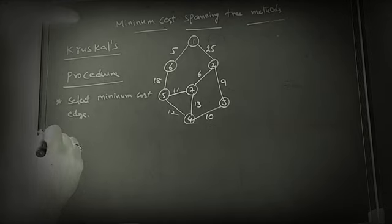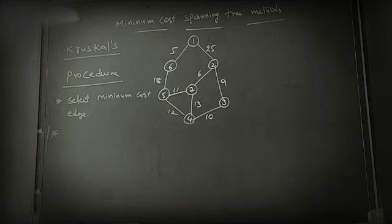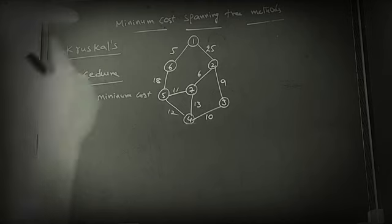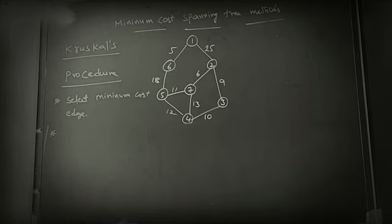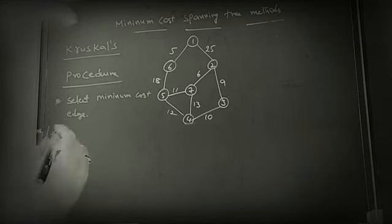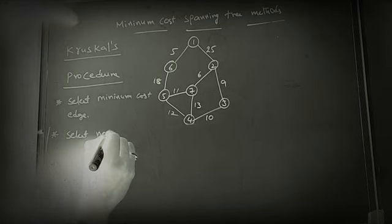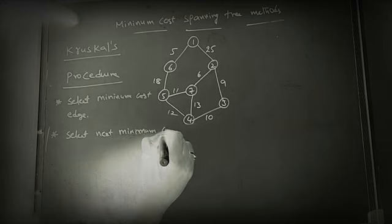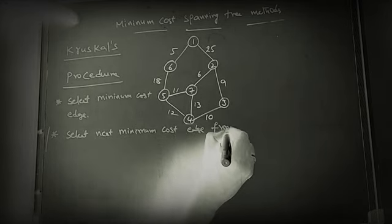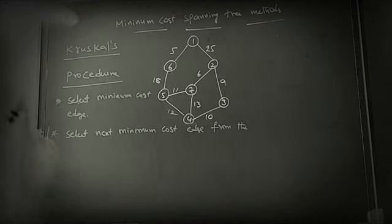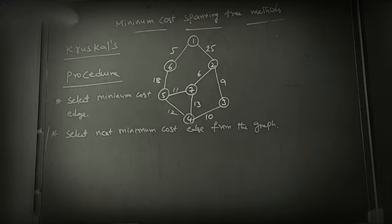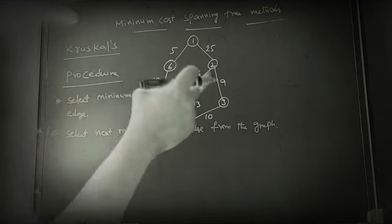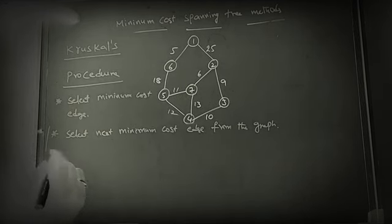The second step is slightly different. This is the major difference between Kruskal and Prim's algorithm. In Prim's algorithm we are selecting only from visited vertices' adjacent list. But here, take any edge which is the next minimum of the graph. Select next minimum cost edge from the graph. This is the very important point. This point differs Prim's and Kruskal. Even though they are connected to adjacent or not, if it is a minimum, next minimum, you can take that wherever it is. This is the procedure.